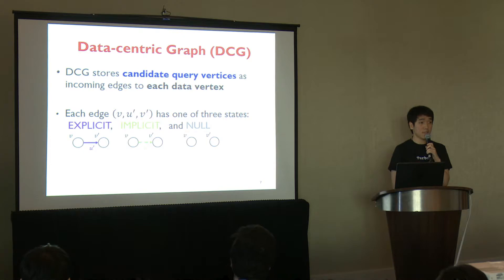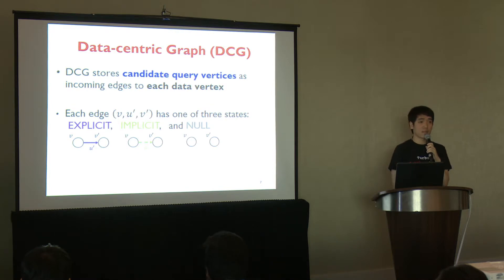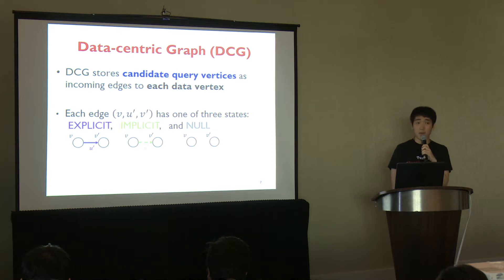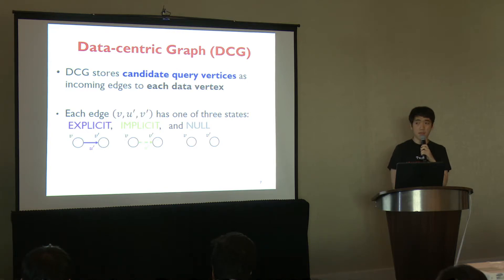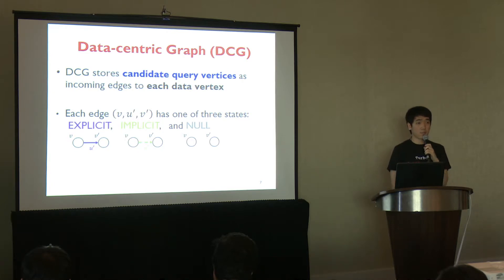The DCG is a labeled graph that stores candidate query vertices of each data vertex as its incoming edges. A labeled edge in the DCG, denoted as (V, U', V'), has a query vertex ID as its label. All edges in the DCG have one of three states: explicit, implicit, and null. I am going to briefly introduce these three types of edges using a simple example.